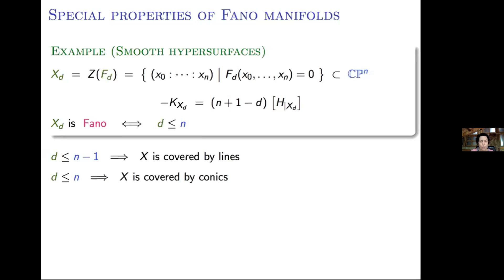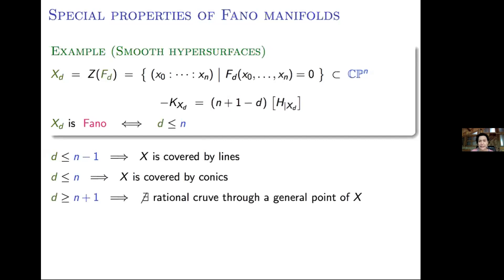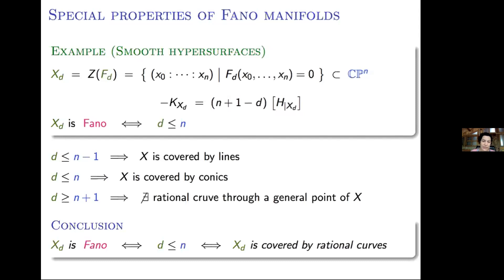In the next degree — still a Fano manifold, but no longer covered by lines — one can check that it is still covered by conics. So in either case, what we see is that Fano hypersurfaces are always covered by rational curves. On the other hand, for higher degree, for degree at least n+1, there is no rational curve through a general point of X. So this is a geometric condition that distinguishes Fano manifolds among hypersurfaces. The conclusion is that X being Fano is equivalent to the degree being less than or equal to n, which is equivalent to the hypersurface being covered by rational curves.